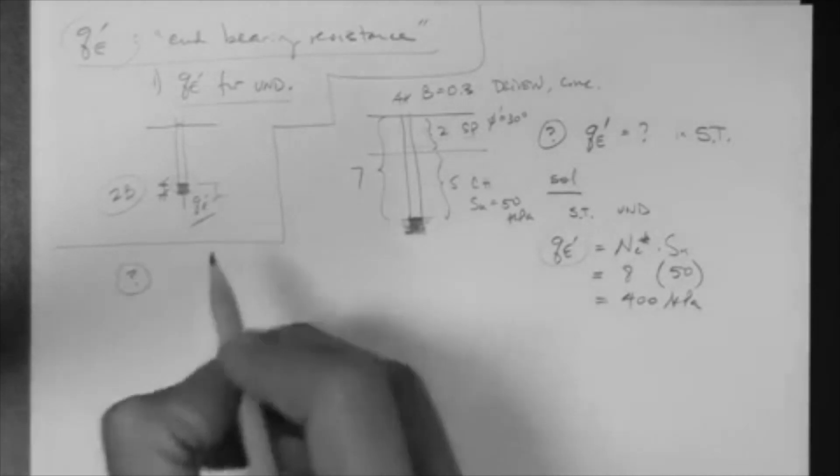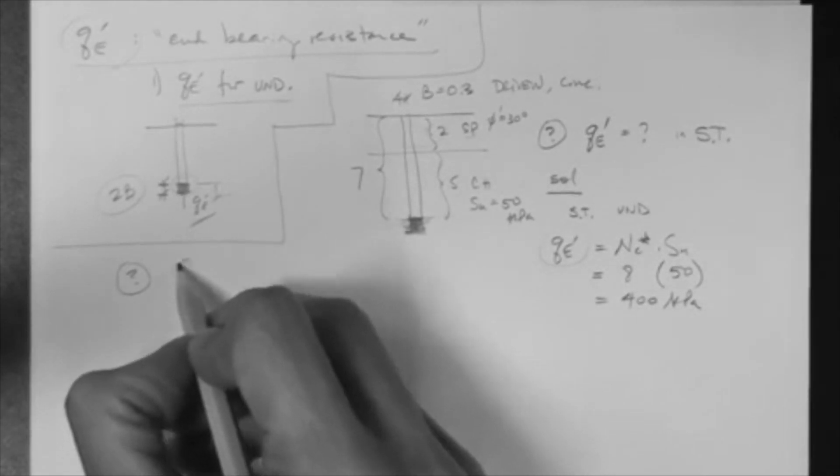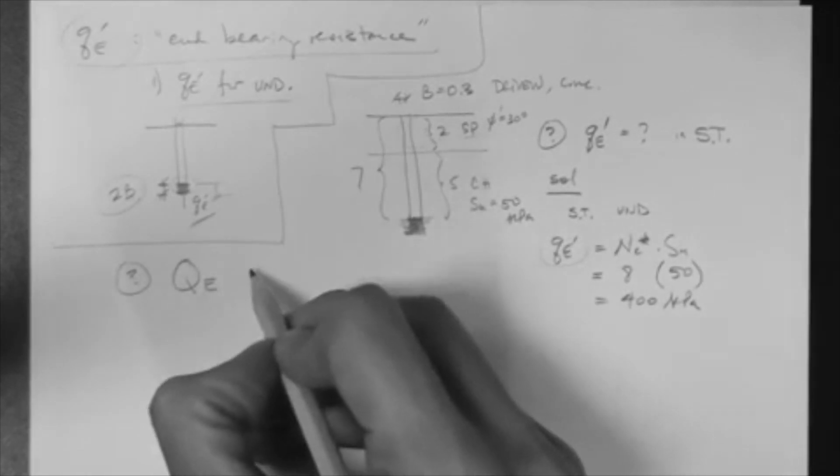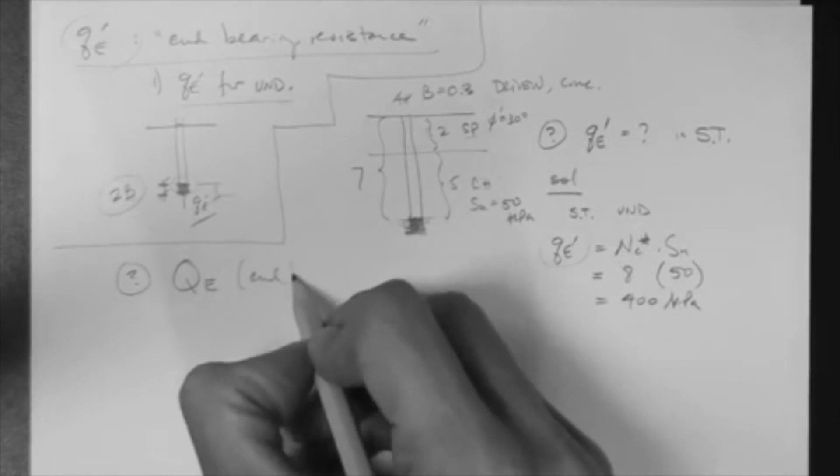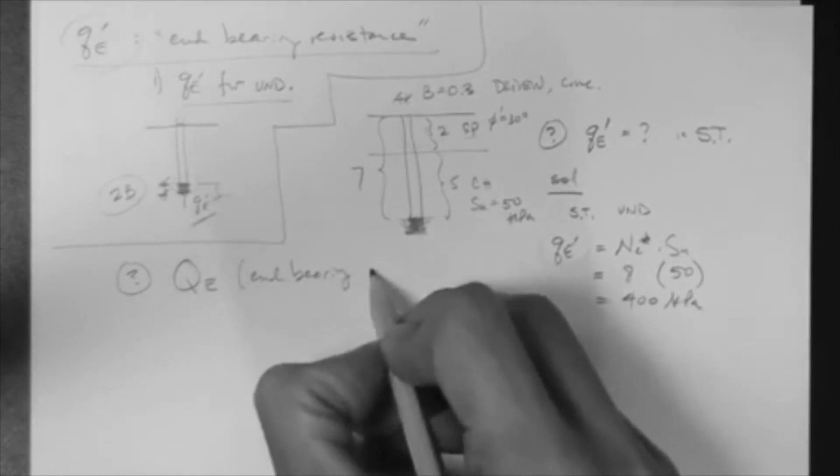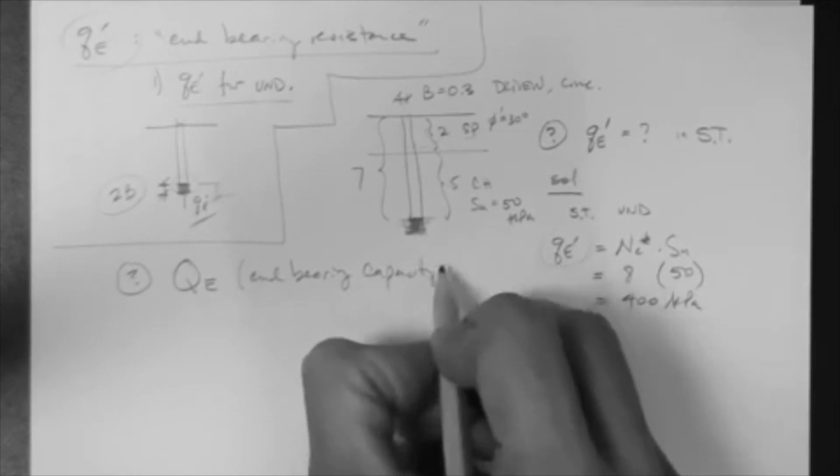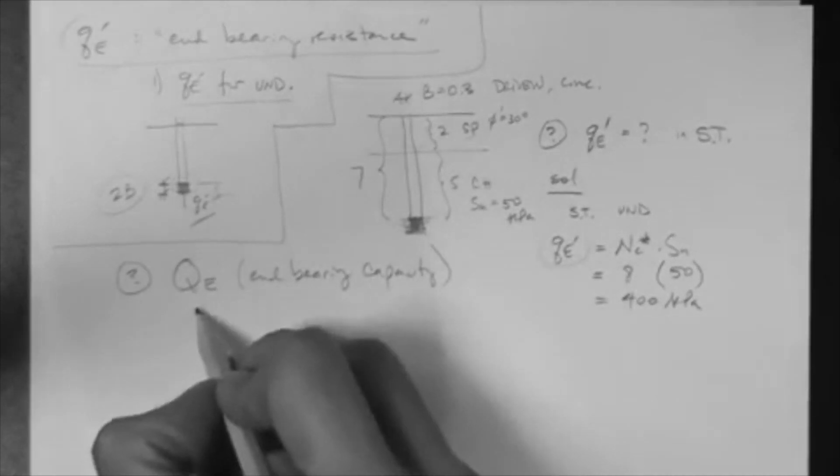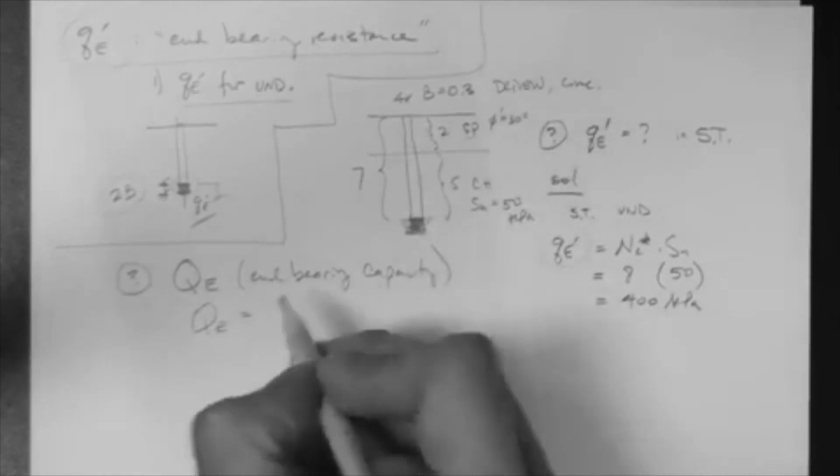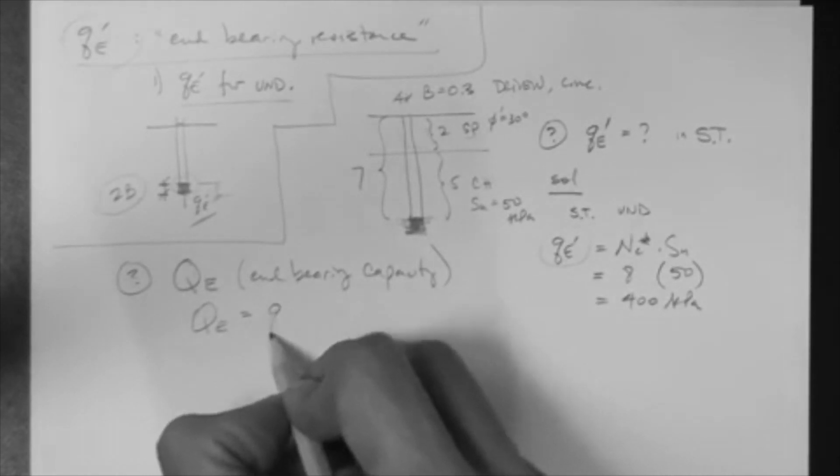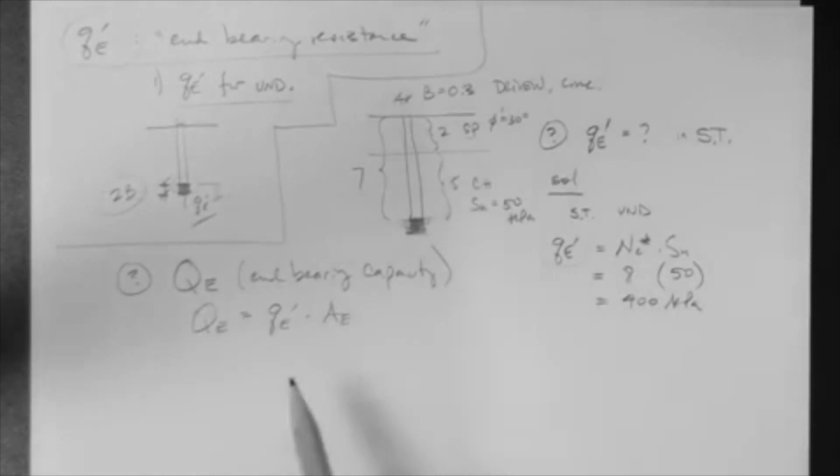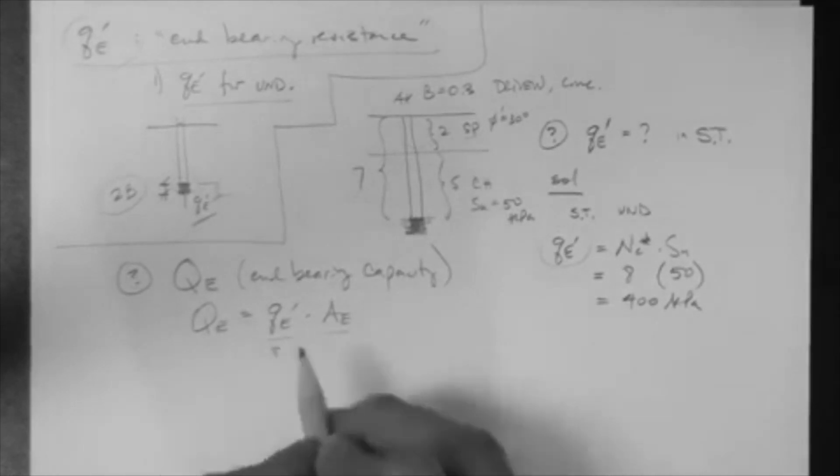Now, to finalize, another question would be, what is the end-bearing capacity? This is the end-bearing capacity. The end-bearing capacity is the stress times the area. Just like we have Qs equal to Fs·As, we have Qe is equal to Qe', end-bearing resistance, times the area. Well, this is a sigma.